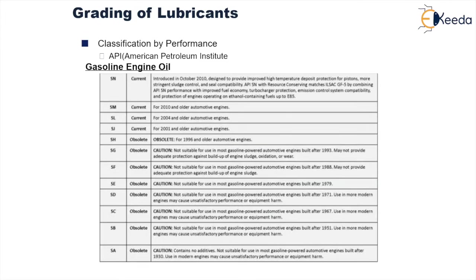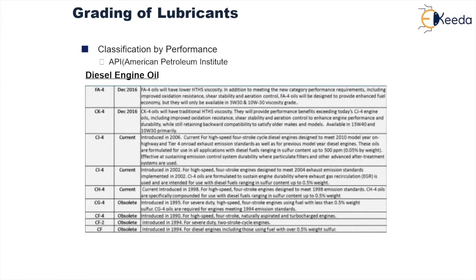By performance, the classification is given by the American Petroleum Institute for gasoline engine oil. There are different categories: SN, SM, SL, SJ, SH, and so on. Some grades of lubricants are currently in use while some have become obsolete. Similarly, for diesel engine oil, different grades such as FA-4, CK-4, CJ-4, CI-4, CH-4 are currently in use, while CG-4, CF-4, CF-2 have become obsolete.